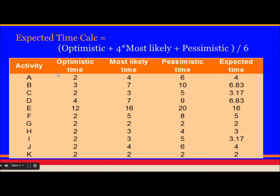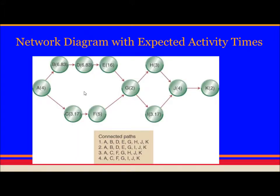This is when optimistic time, most likely time, and pessimistic time are given. You need to calculate the expected time using this formula, which is also called PERT analysis. In PERT analysis, the formula is: optimistic plus 4 times most likely plus pessimistic, the whole thing divided by 6. This gives you the expected time for each activity. This is the network diagram with expected activity times.